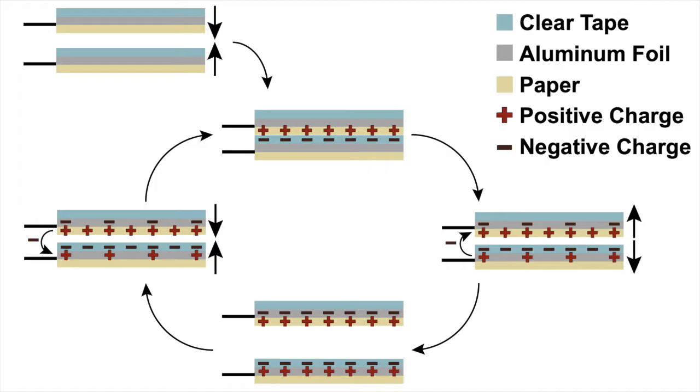Triboelectric nanogenerators take advantage of this same principle as you shocking yourself on that doorknob, except instead of shocking yourself, they send the electricity through a circuit. Each time we tap this nanogenerator, we're forcing the paper from one strip and the tape covering the other paper strip into contact.